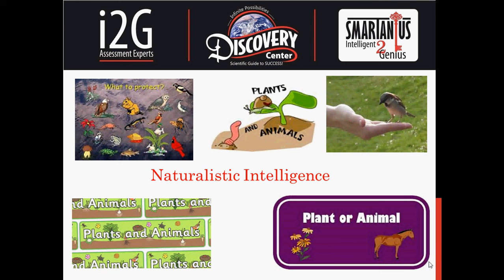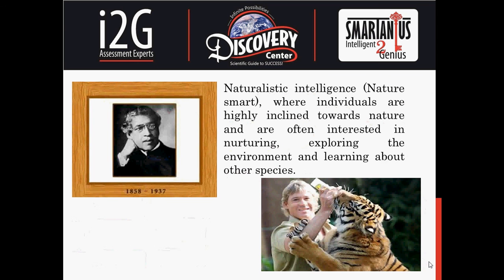Naturalistic Intelligence, or Nature Smart, involves knowledge in tune with the environment. Having this intelligence is possible through encounters with the natural world, including recognition, appreciation, and understanding of the natural environment. It involves capacities such as species identification, communion with the natural world and its phenomena, and the ability to recognize and classify various flora and fauna.